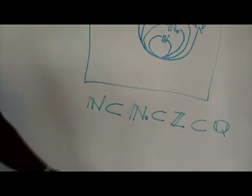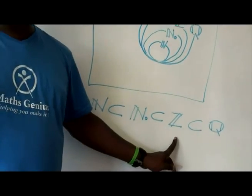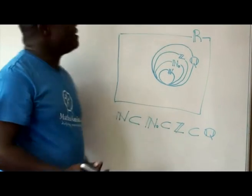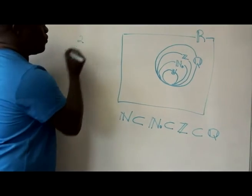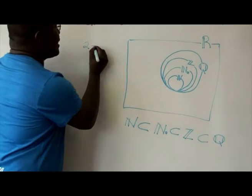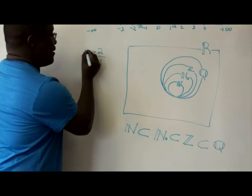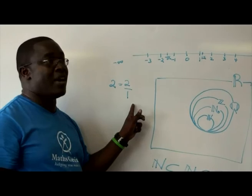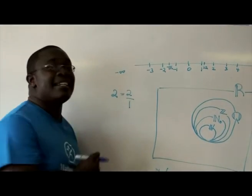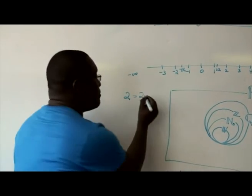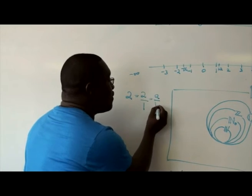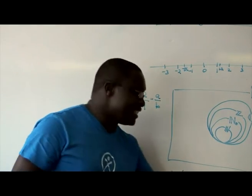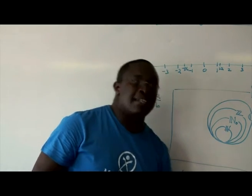You might be asking, how are integers contained in rational numbers? Remember, if a number is written as two, it's the same as saying two over one. Two is equivalent to two divided by one, which by definition is a rational number because it can be written in the form A over B. That is why all the integers are rational numbers.